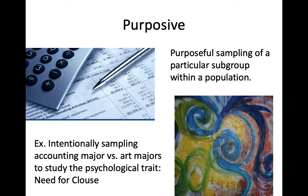Another non-probability technique is called purposive sampling. This is when you want to study certain kinds of people, so you only recruit those types of participants. For example, if you wanted to recruit people who were smokers to understand how to get people to quit smoking, you might put up advertisements saying that if you're a smoker, you are eligible to participate in the study.